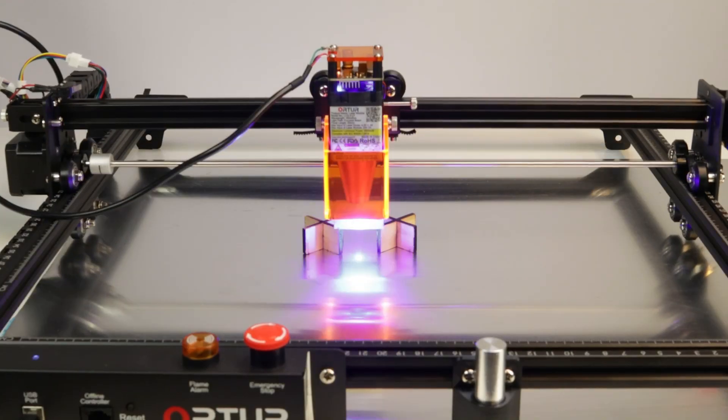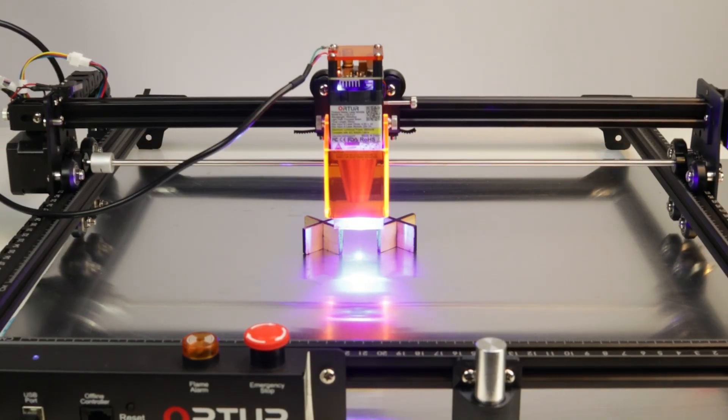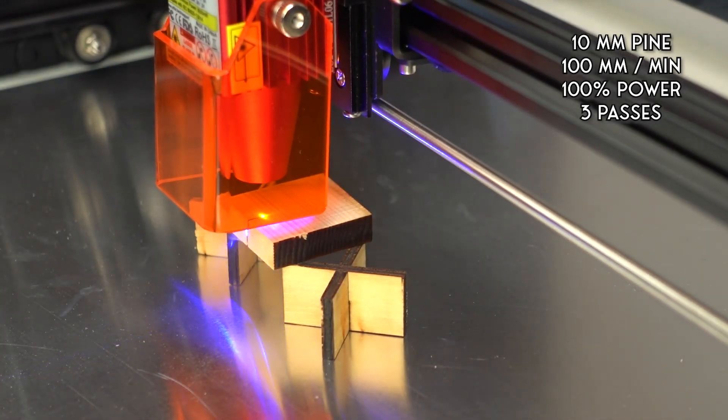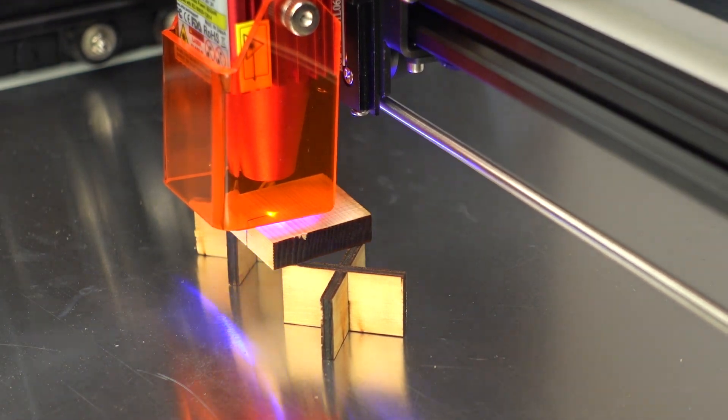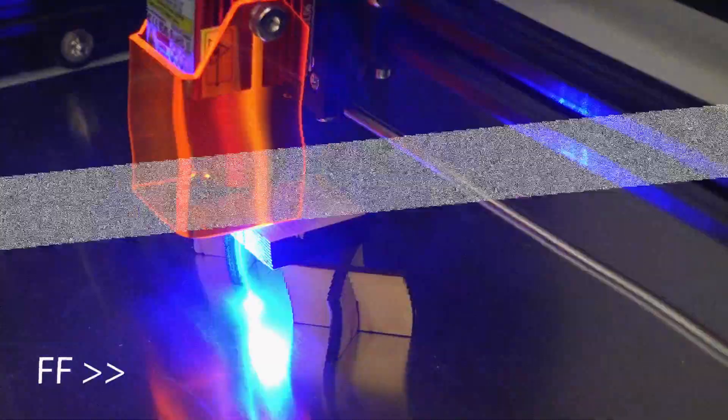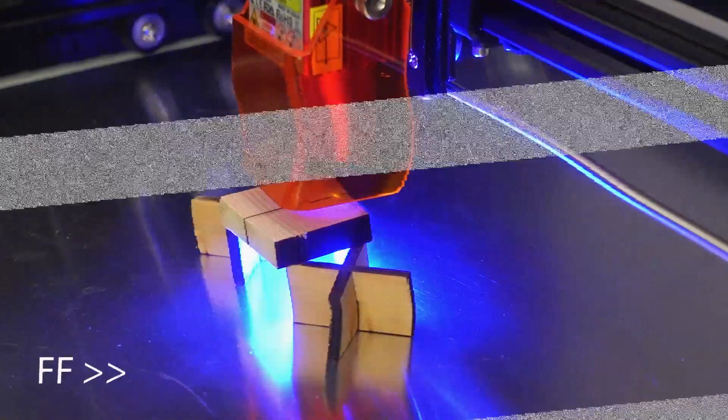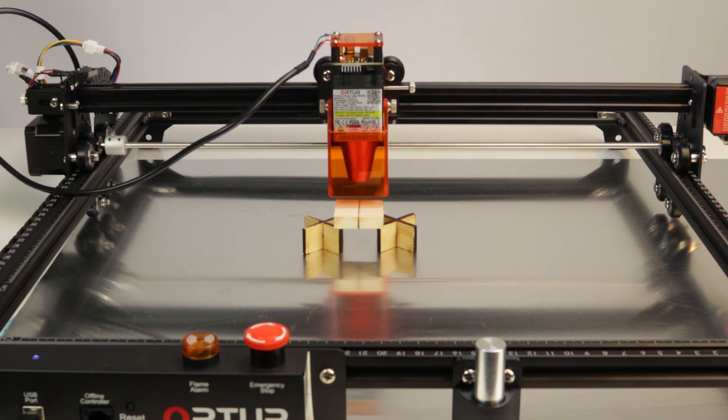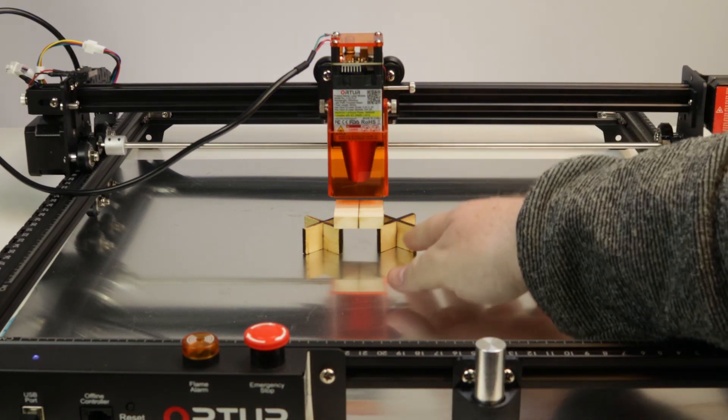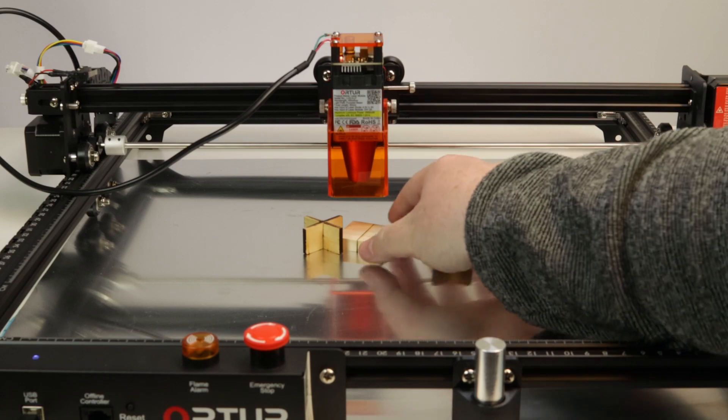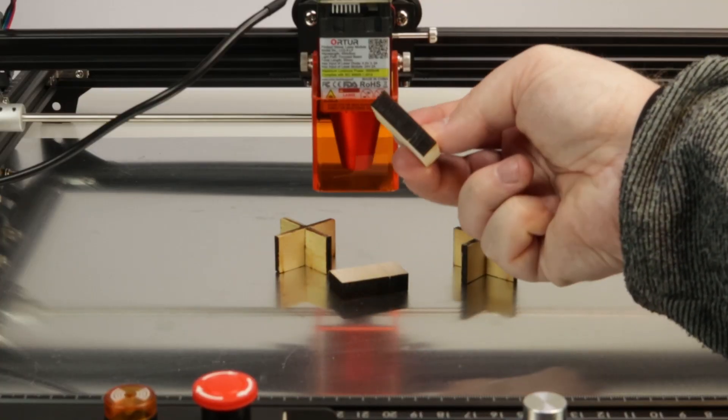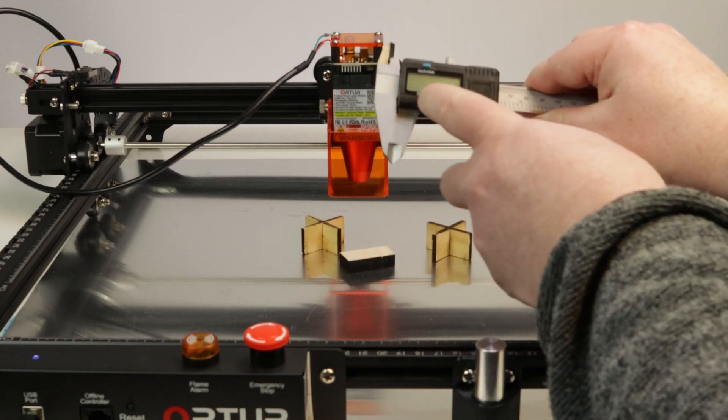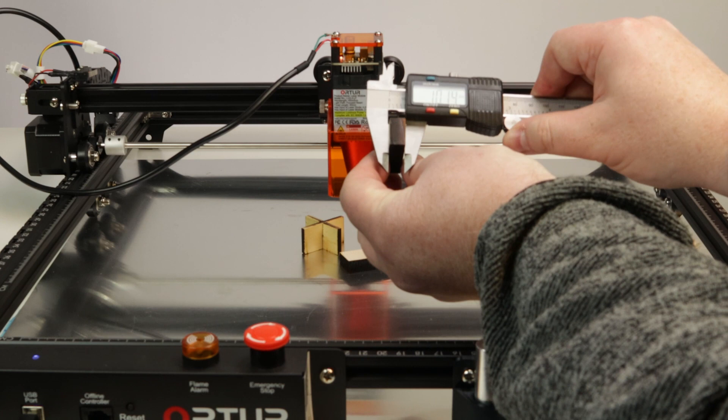We'll soon test the air assist, but first let's see if we can cut through this 10 millimeter pine board. The recommended setting stops at 9 millimeters, but let's use them and see how it turns out. We're running the laser at 100% power, 100 millimeters per minute and three passes. That's a clean cut. In just three passes, it cut through exactly 9.68 millimeters of pine board.